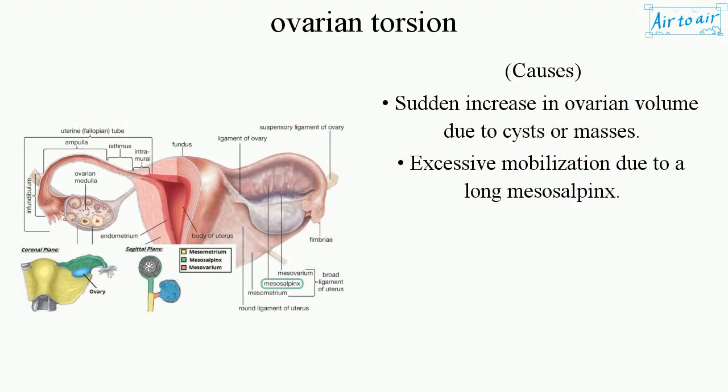Causes: sudden increase in ovarian volume due to cysts or masses, and excessive mobilization due to a long mesosalpinx.